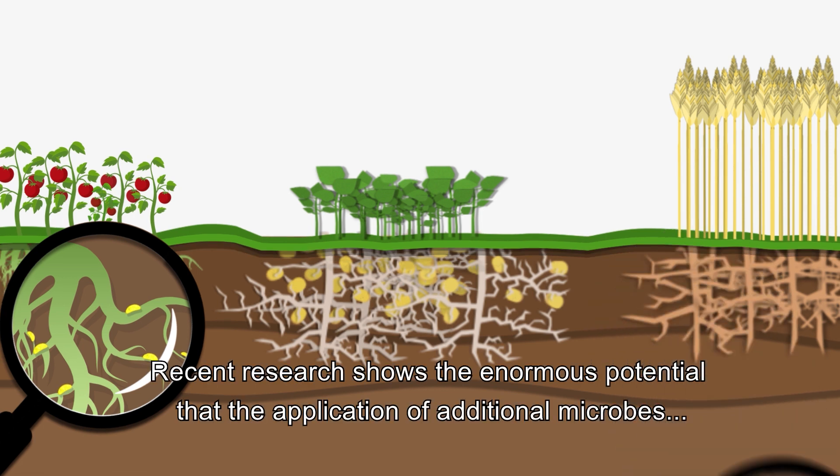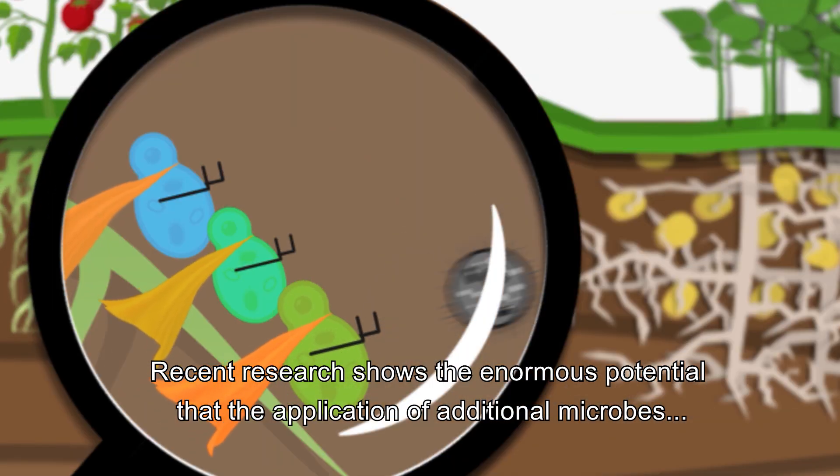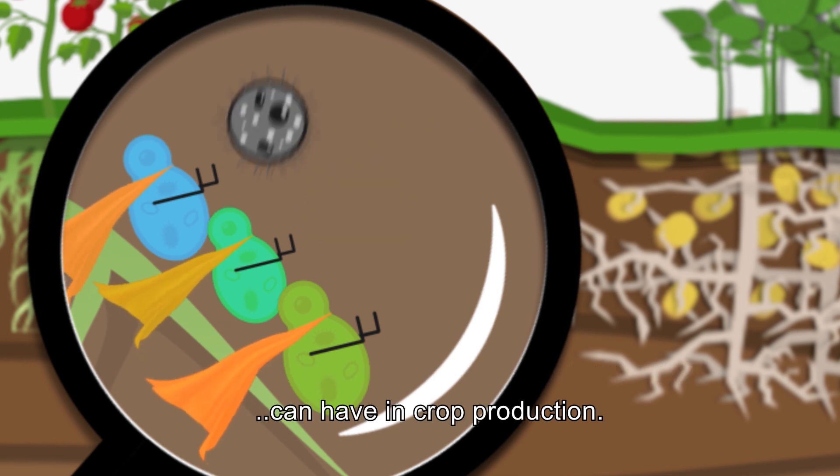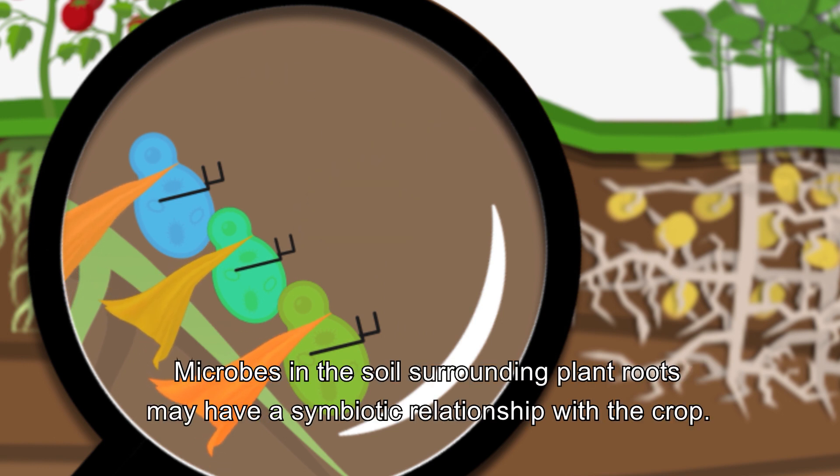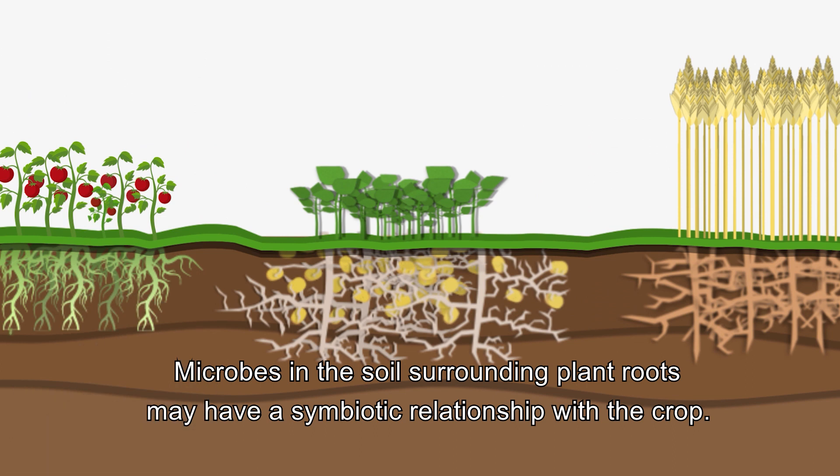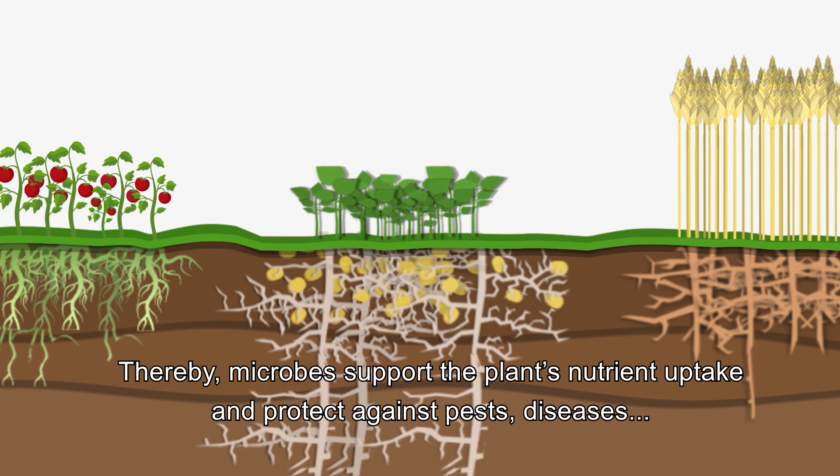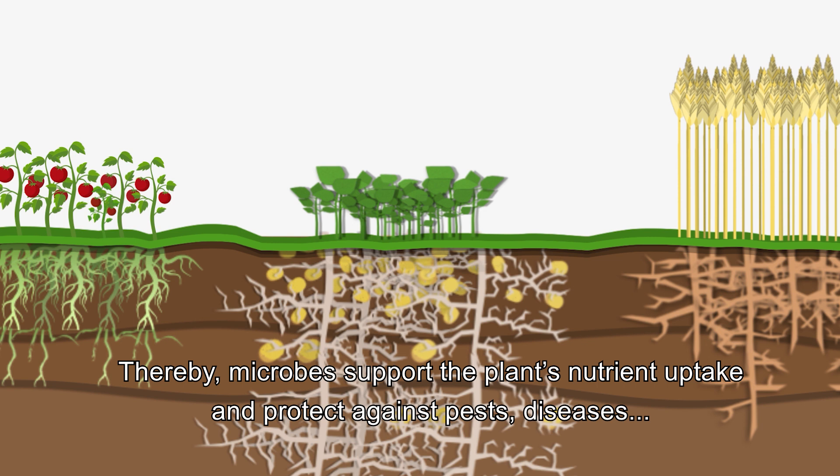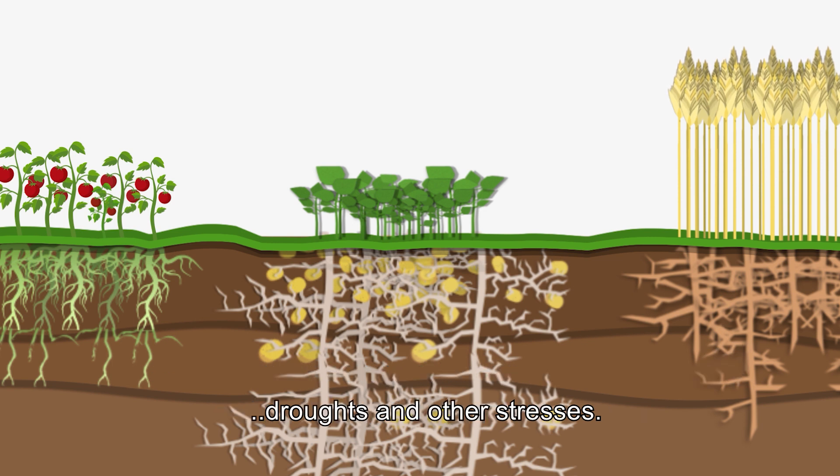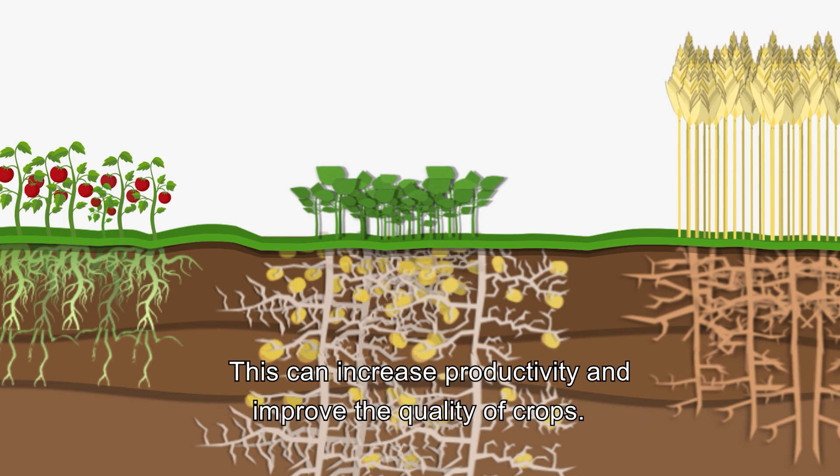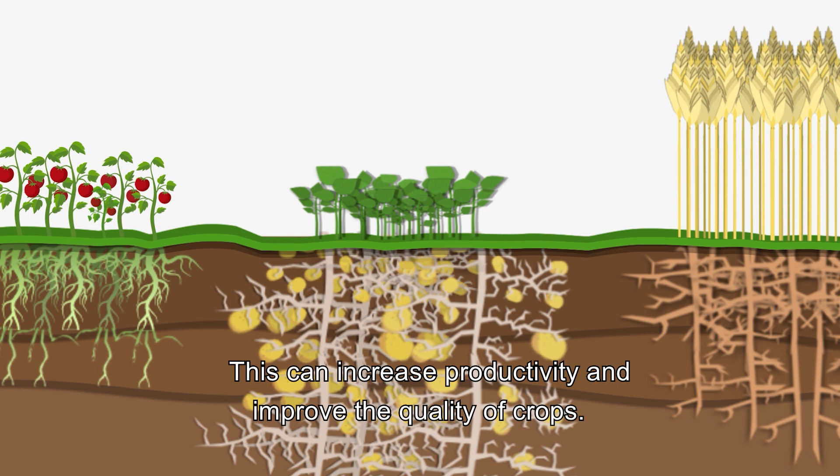Recent research shows the enormous potential that the application of additional microbes can have in crop production. Microbes in the soil surrounding plant roots may have a symbiotic relationship with the crop. They enlarge the crops network of roots, thereby microbes support the plants nutrient uptake and protect against pests, diseases, droughts and other stresses. This can increase productivity and improve the quality of crops.